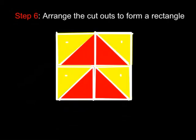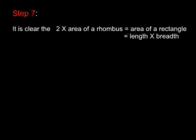Arrange the cutouts to form a rectangle as shown. It is clear that two times the area of a rhombus is equal to area of rectangle. That is, length times breadth.